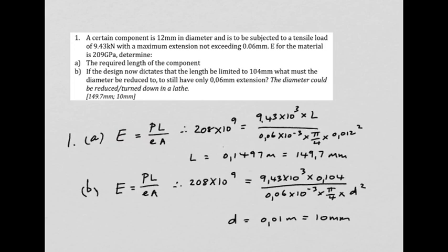Now we go on to part B where we see that the design now said that 149 was too long. We have to have 104 millimeters only, perhaps there's a space constraint in your design. So the solution to that would be to change the only other value that we're allowed to change, which is the diameter. If we were to reduce the diameter, a shorter specimen would still be able to stretch as much as the longer specimen, provided you make it of a lesser diameter.